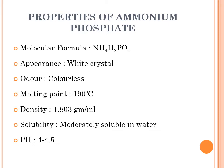The properties of ammonium phosphate are as follows: the molecular formula is NH4·H2PO4. Its appearance is a white crystal with no odor. The melting point is 190°C, the density is 1.803 g/cm³, solubility is moderately soluble in water, and the pH is approximately 4 to 4.5.